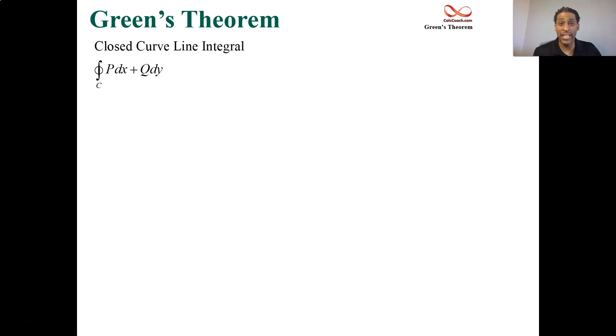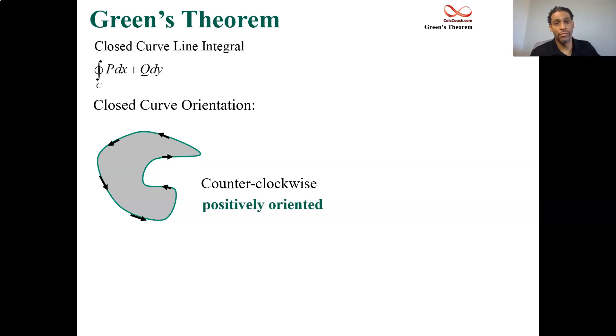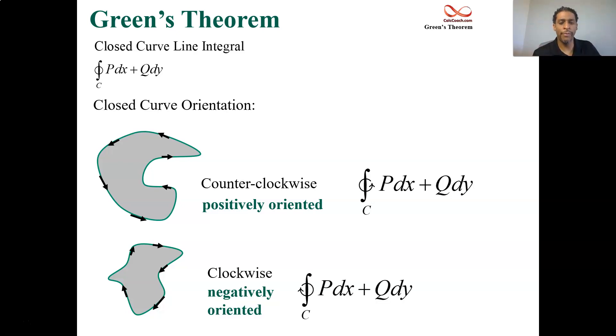When you have a closed curve, there's an orientation that we have to discuss. If your curve is oriented in a way that when you walk around the curve, what we have is considered counterclockwise or anticlockwise, this is considered positively oriented. That's considered negatively oriented. You can indicate that by putting an arrow on your circle as well. If you have something that's negatively oriented, just put a negative and you can flip the orientation.